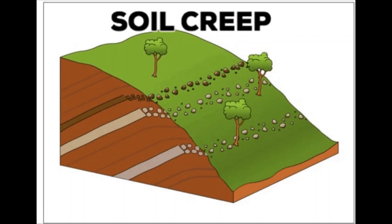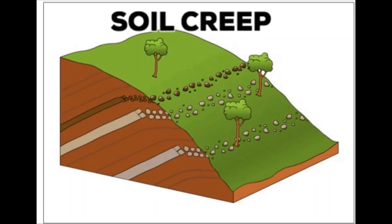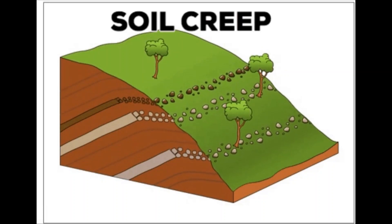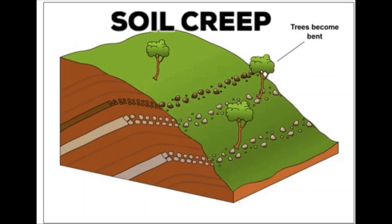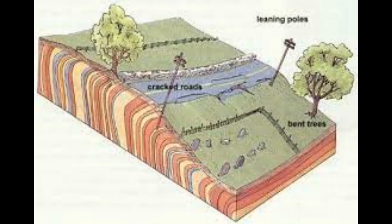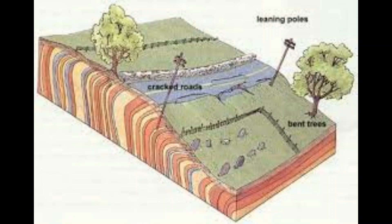Soil creep is the slow, gradual but continuous movement of soil down a slope. Soil creep is very slow and cannot be readily seen in action. However, tilt trees, fences, the accumulation of soil at the foot of a slope, tension gashes in roads, and thinner soil at the top of the slope are all evidences of soil creep.